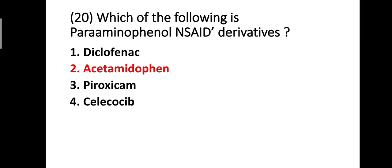Question twenty: which of the following is a para-aminophenol NSAID derivative? Option one: diclofenac, option two: acetaminophen, option three: piroxicam, option four: celecoxib. The correct answer is acetaminophen — para-aminophenol means 'phen' and amino means 'acetamido', so acetaminophen is a para-aminophenol NSAID derivative.